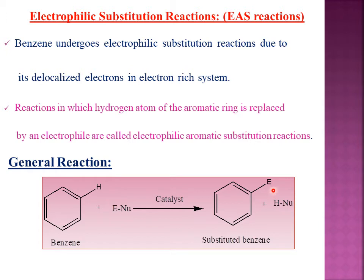The reactions in which there is a replacement of hydrogen of an aromatic ring with an electrophile are known as electrophilic aromatic substitution reactions. In this reaction, benzene reacts with a reagent in the presence of a catalyst, and the hydrogen atom of benzene is replaced by the electrophile of the reagent, finally giving substituted benzene.